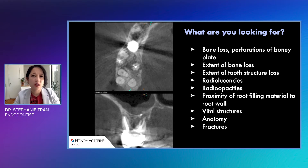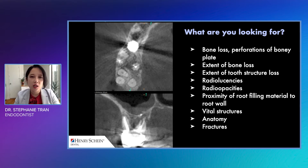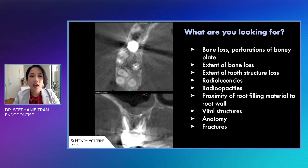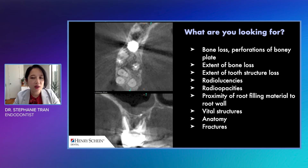So if we're using a CBCT, what are we looking for instead? We're looking for pretty much everything else around the tooth. We want to see what kind of bone loss there is, what kind of lesions — whether they're radio-opaque or radiolucent — and the description of the lesions themselves, like if there is a clearly delineated corticated border or a more diffuse border. We also want to see if the bone loss extends to the buccal or lingual bony plate, close to other teeth or vital structures, the extent of tooth structure loss, any resorption or caries, what the root filling materials and canal morphology look like, the vital structures, and of course if there are any fractures within the tooth.